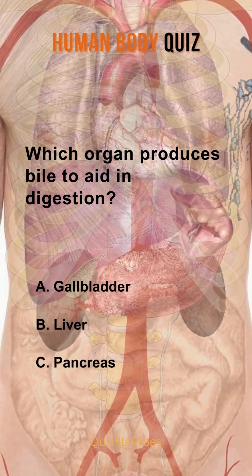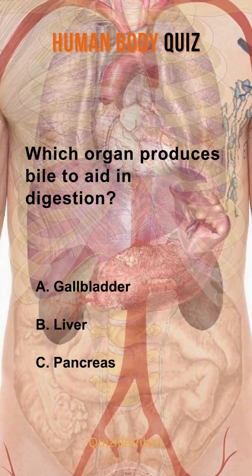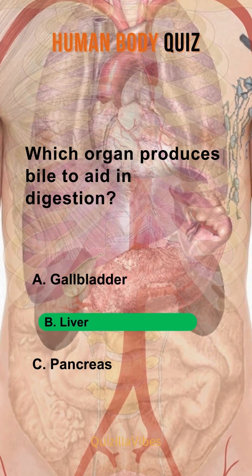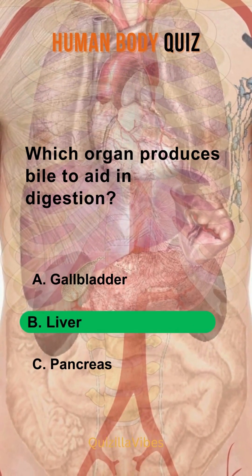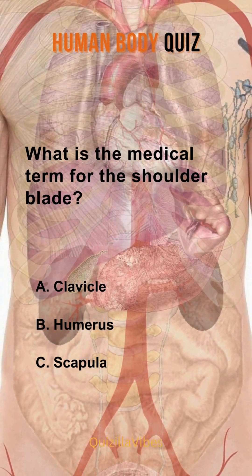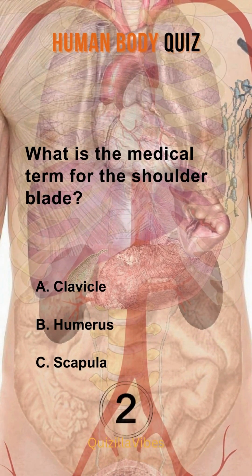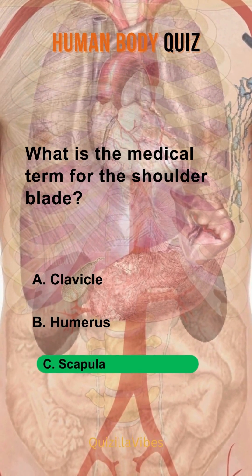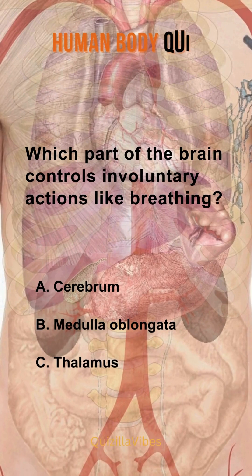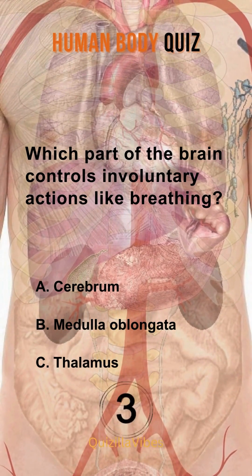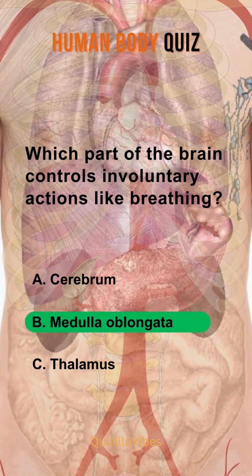Which organ produces bile to aid in digestion? Liver. What is the medical term for the shoulder blade? Scapula. Which part of the brain controls involuntary actions like breathing? Medulla oblongata.